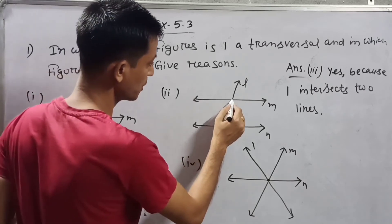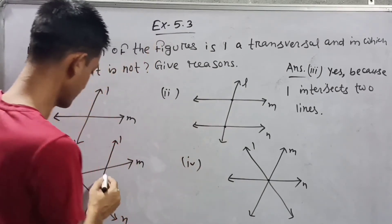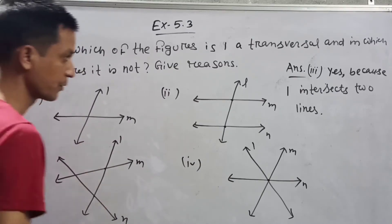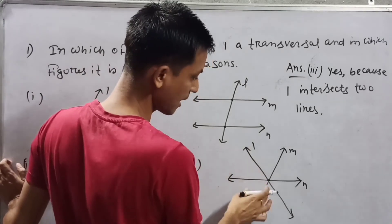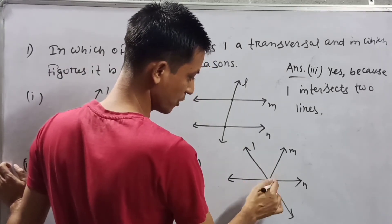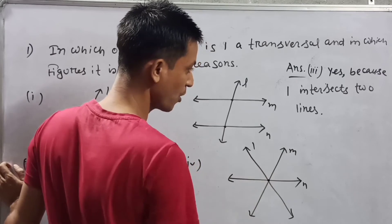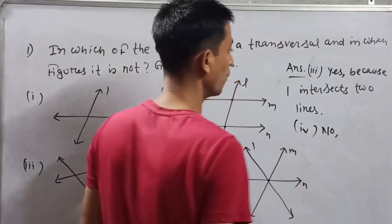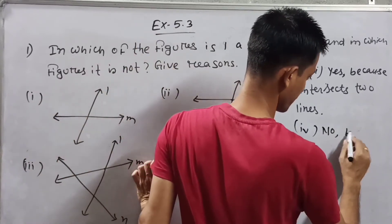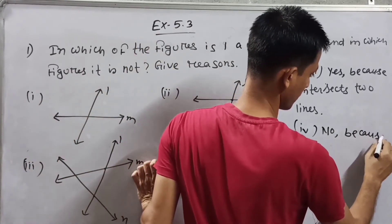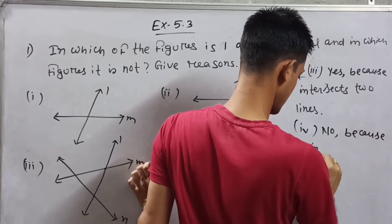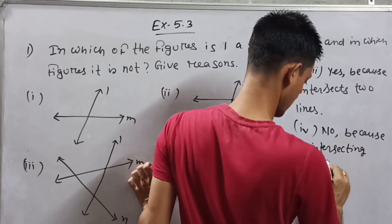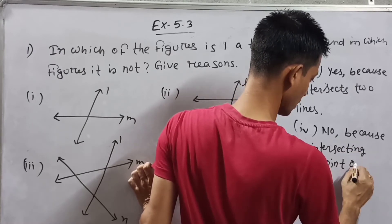But their intersection points should be different — at different points. Here you can see L intersects at different points, two points. So L is a transversal here. But for the intersecting lines figure, L also intersects, but the intersecting point is only one. So it is not a transversal — because the intersecting point is only one.